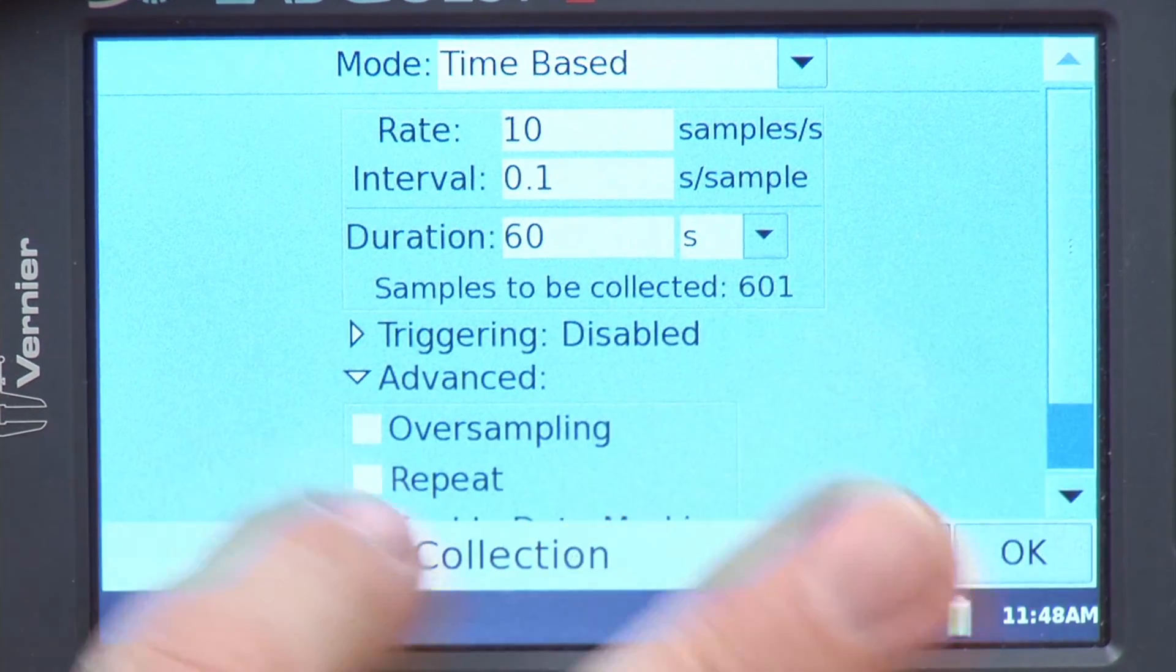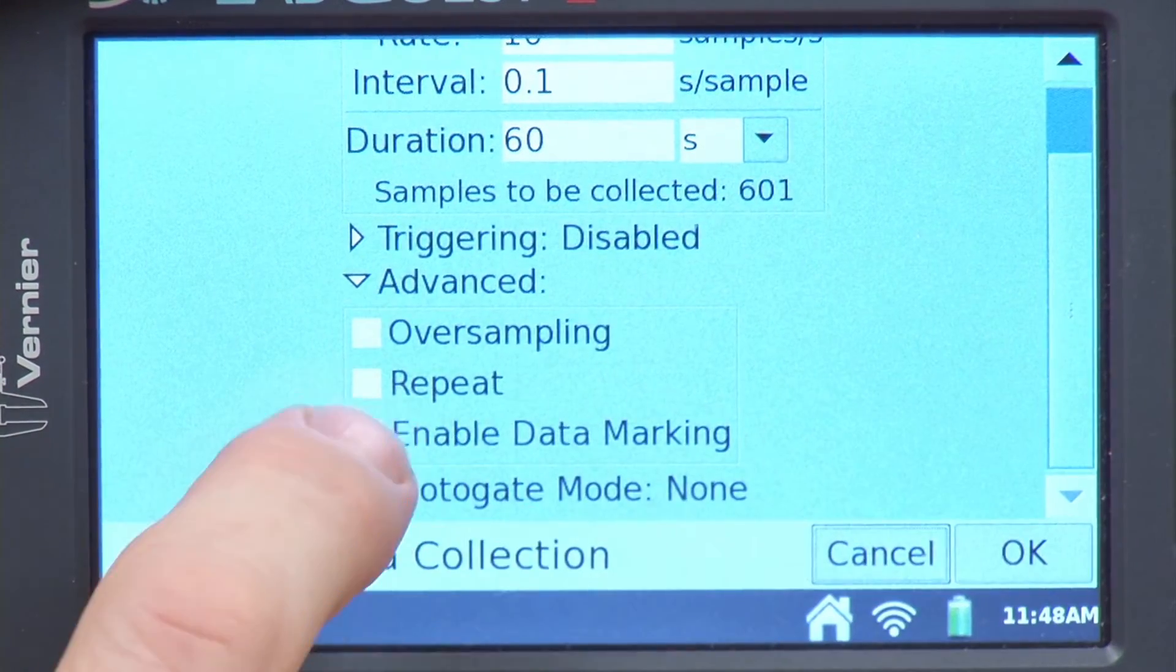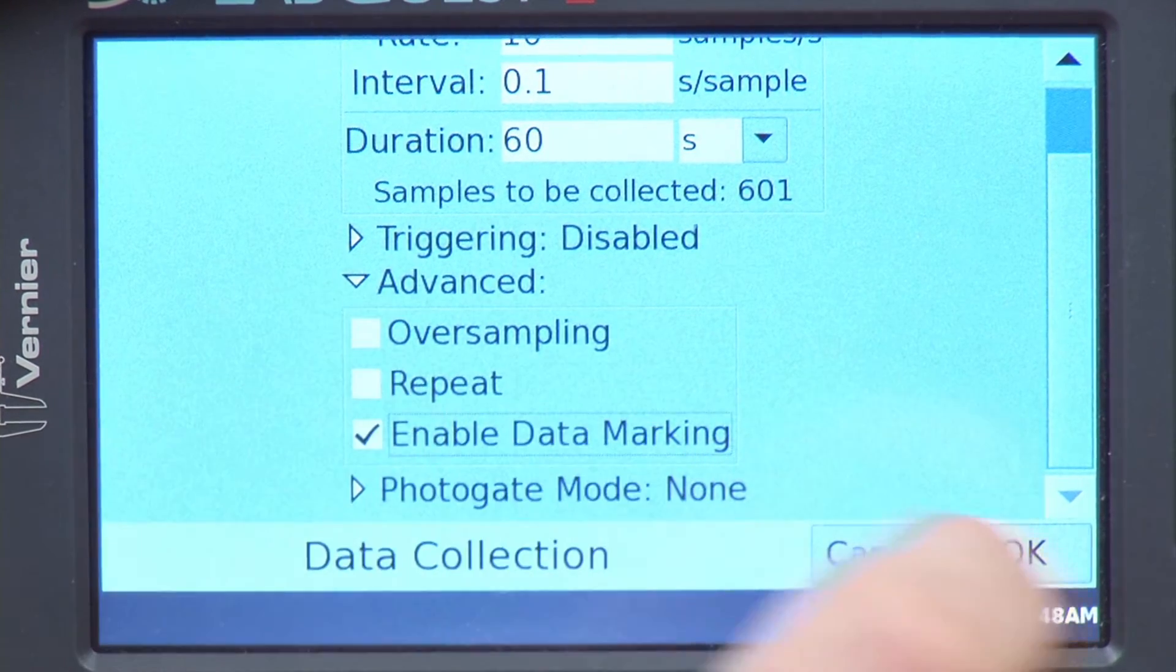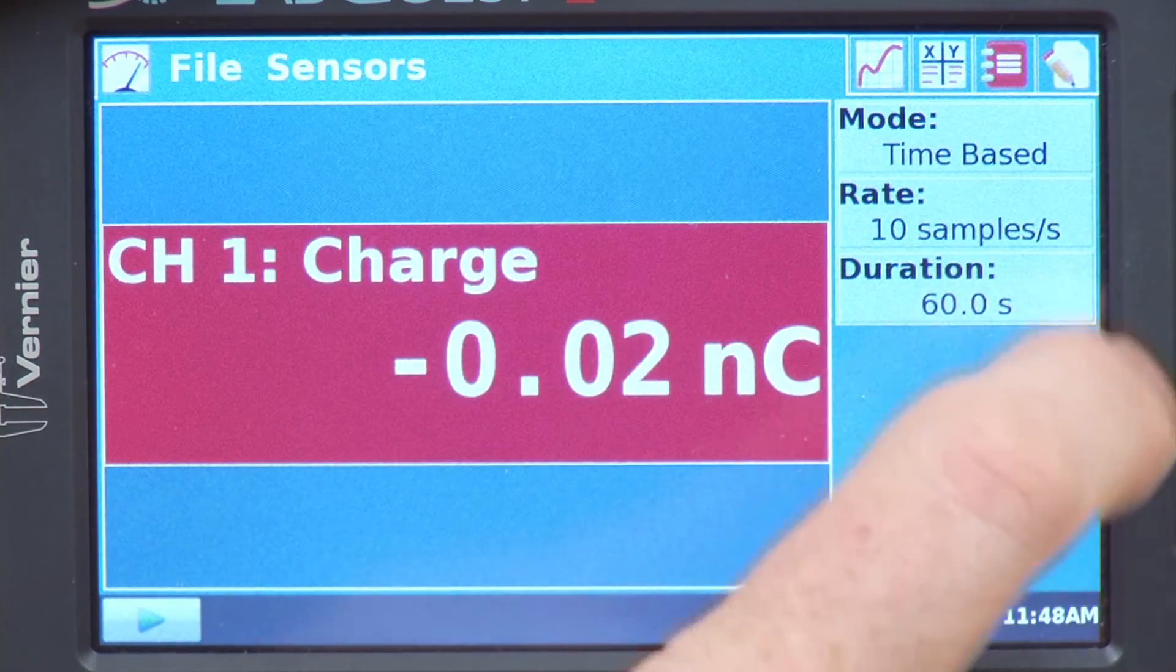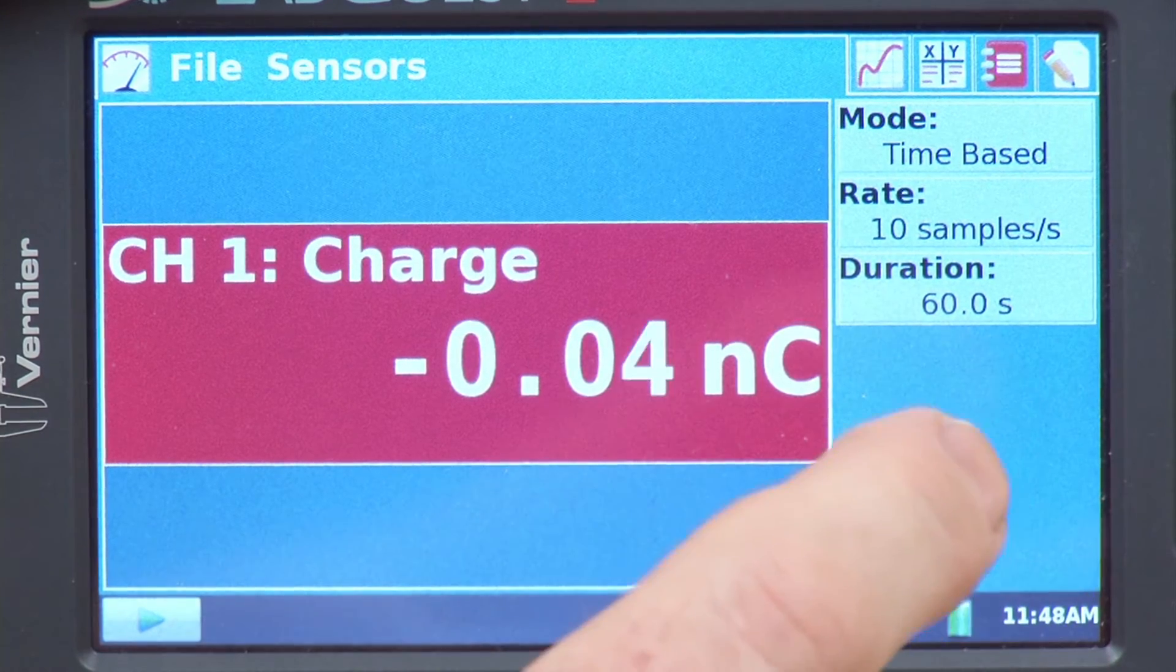I'm going to go to the meter, and then go to advanced, pull down, enable data marking, and say OK. Now I'm ready to begin collection.